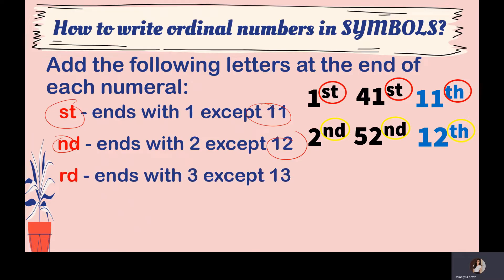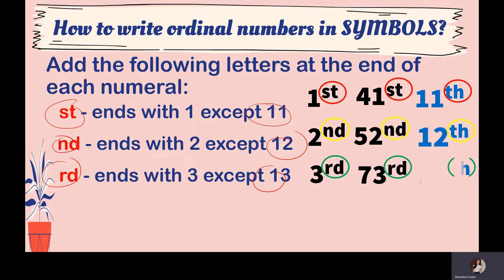The third suffix is RD. Add RD if a number ends with 3, except 13. For example, 3RD (third) and 73RD. For 13, you add TH instead. So remember the exceptions: 11, 12, and 13.